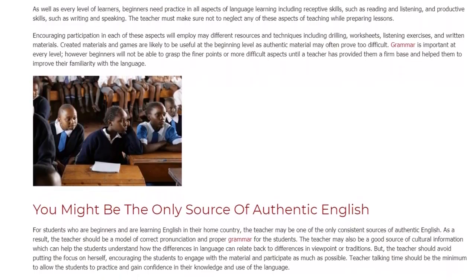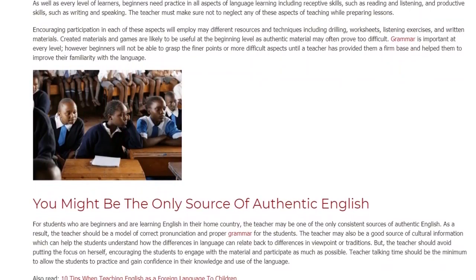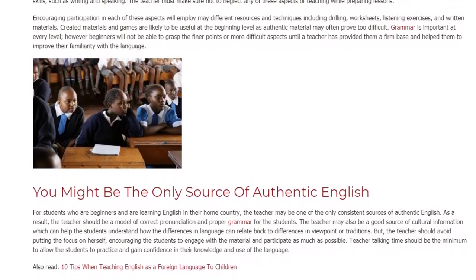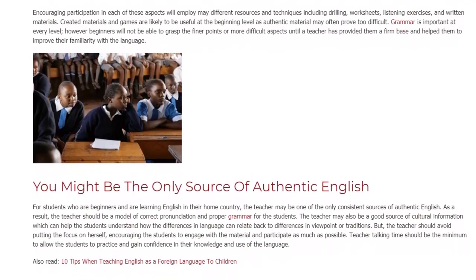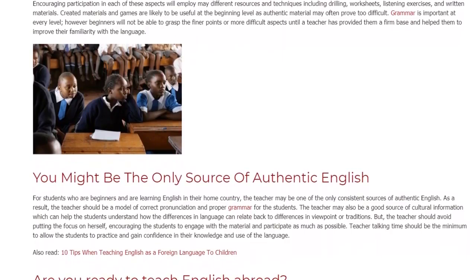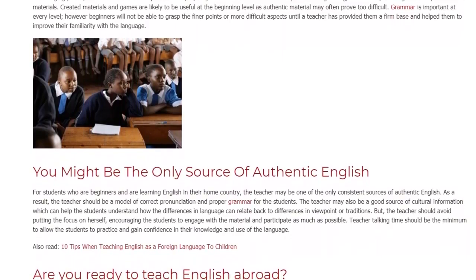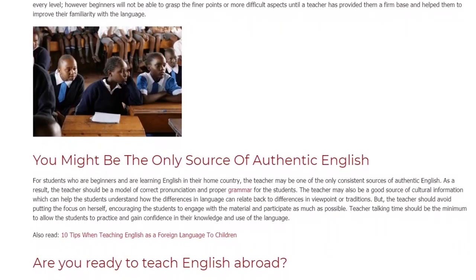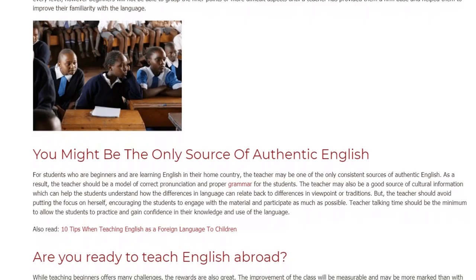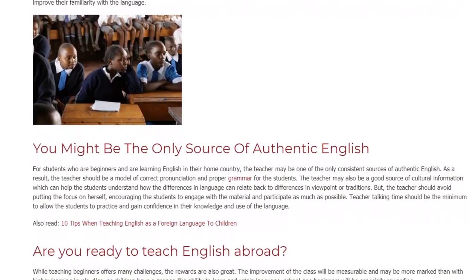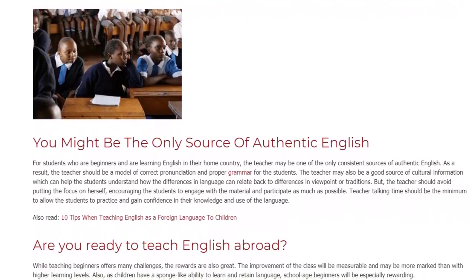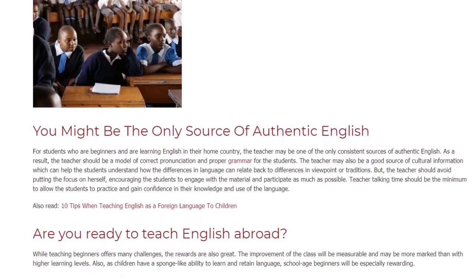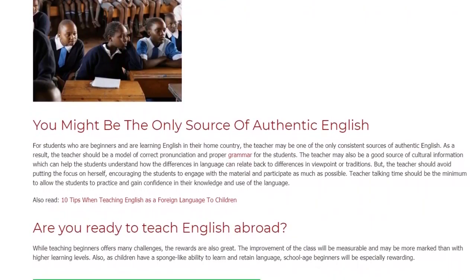You might be the only source of authentic English. For students who are beginners and are learning English in their home country, the teacher may be one of the only consistent sources of authentic English. As a result, the teacher should be a model of correct pronunciation and proper grammar. The teacher may also be a good source of cultural information, which can help students understand how differences in language relate back to differences in viewpoint or traditions.